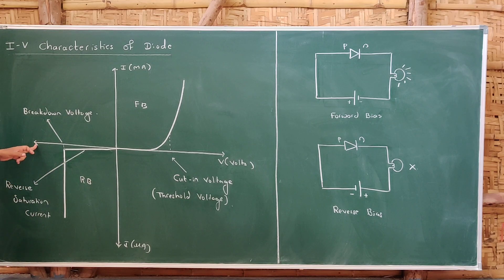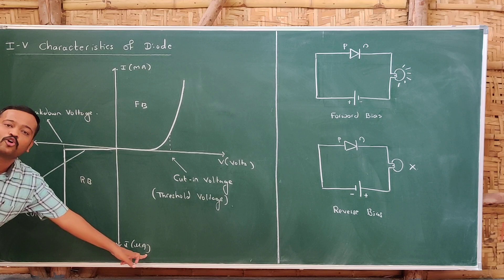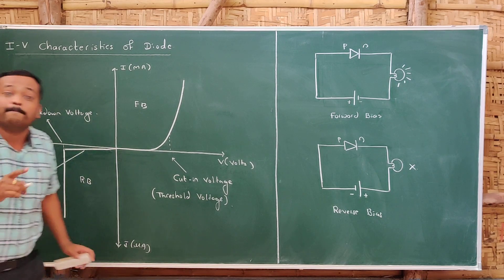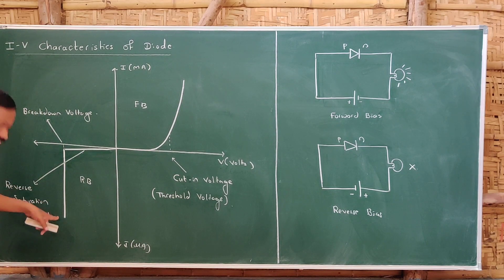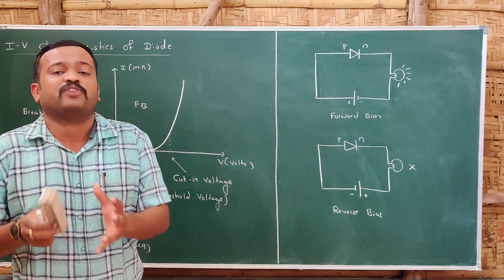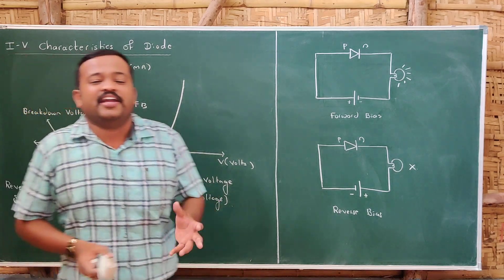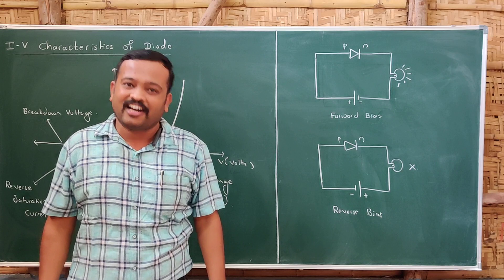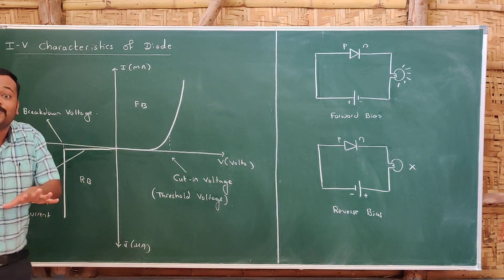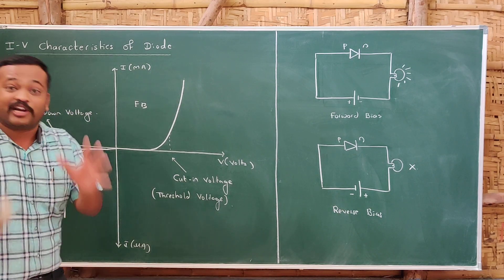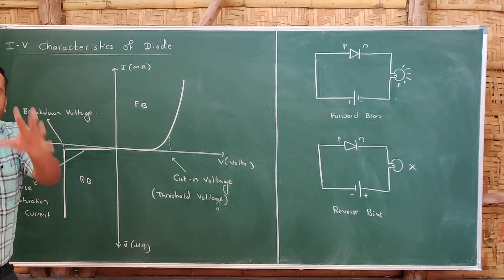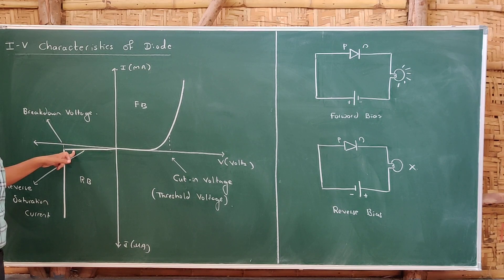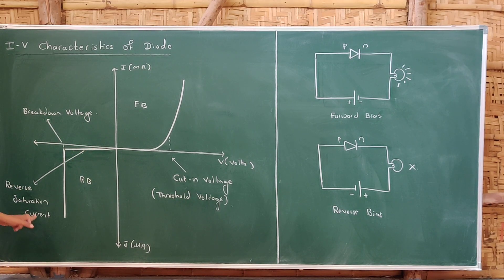In the reverse bias characteristics, the voltage is in the reverse direction and the current is in microamps due to the motion of minority charge carriers — so there is a very small amount of current. At a certain particular voltage, the current increases infinitely: the electric field breaks the covalent bonds between atoms near the junction, electron-hole pairs are created, and the diode breaks down. That voltage is called the breakdown voltage — the reverse bias voltage at which current increases infinitely and the diode breaks down. Before breakdown, the small constant current is called the reverse saturation current.